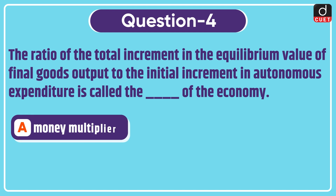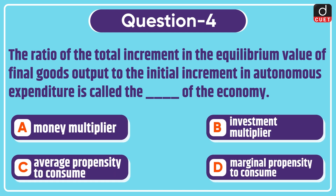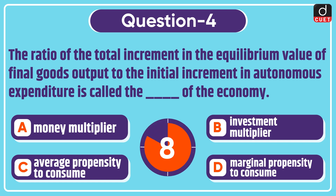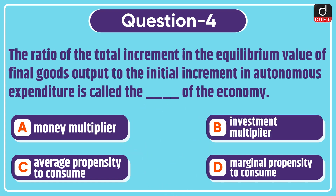Next question is: the ratio of the total increment in the equilibrium value of final goods output to the initial increment in autonomous expenditure is called the dash of the economy. Money multiplier, investment multiplier, average propensity to consume, or marginal propensity to consume? The correct answer is option B, investment multiplier.